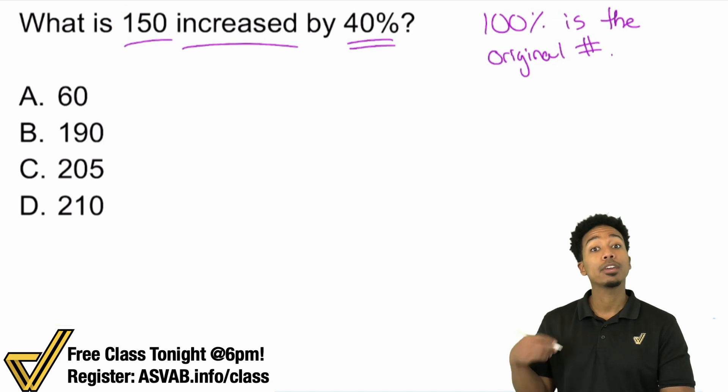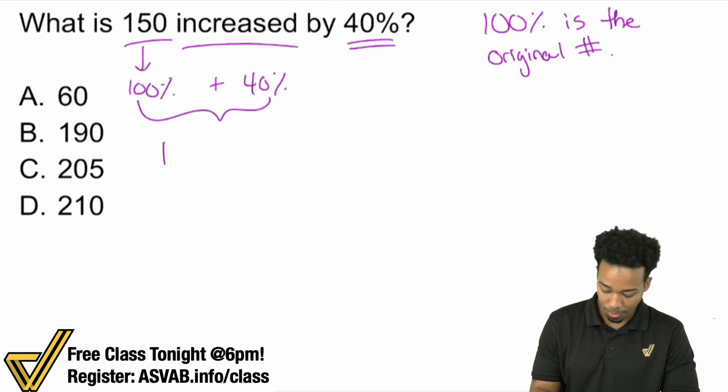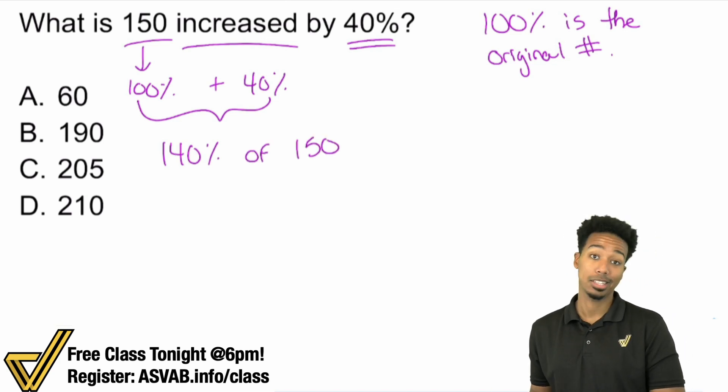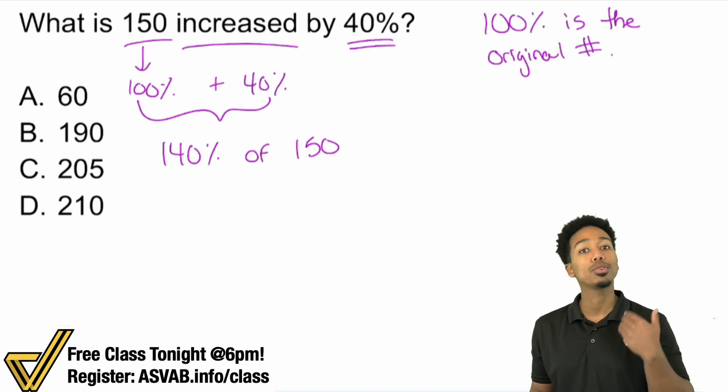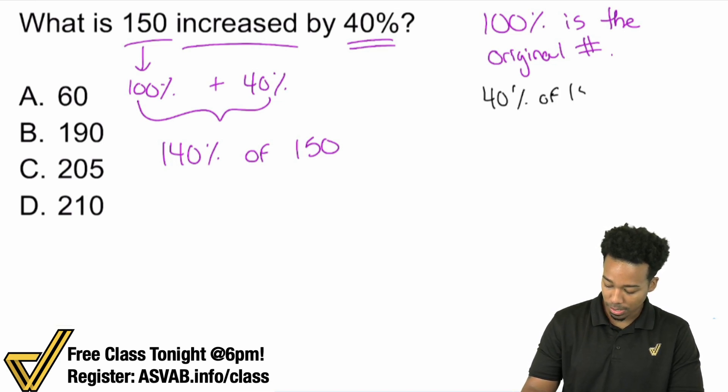So 150 is really saying that's 100%. That is called the 100% of the situation. So if we're increasing by 40%, what we would do is we would say, hey, if this is the 100% and you're increasing, adding 40%, really what you're doing is bam, you're taking 140% of that 150. That's exactly what you're doing. And so if you can see it that way, you can save yourself the time of finding out what 40% of 150 is, and then adding it back to 150.